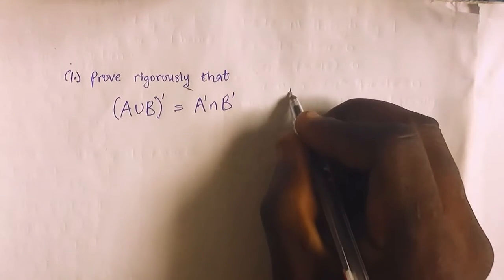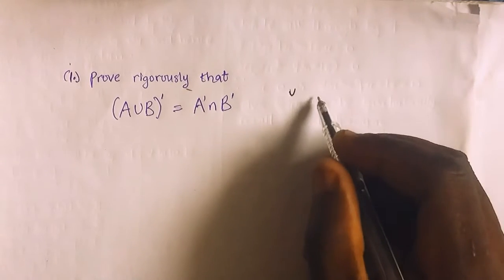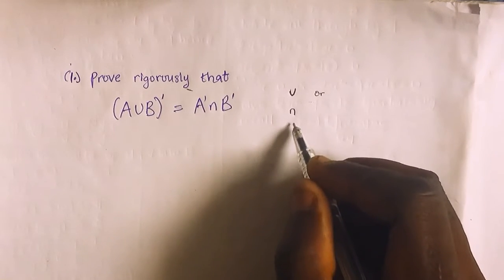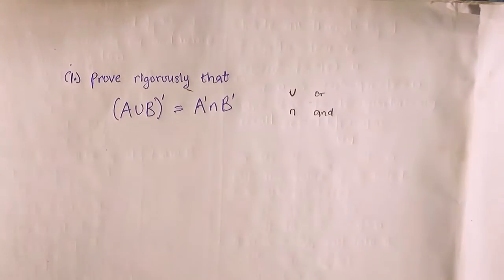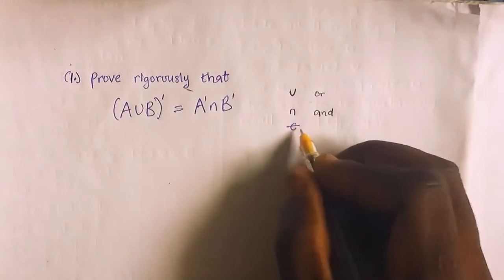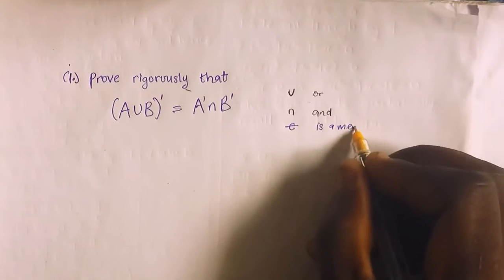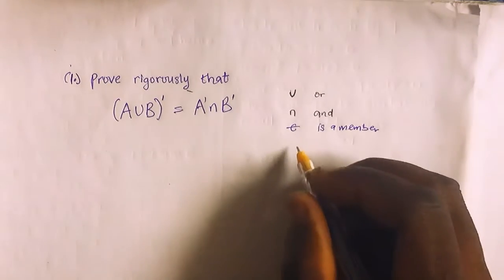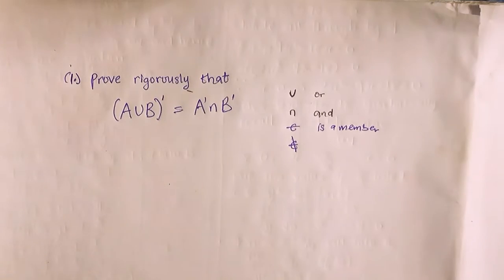If we have something like this — this is a union of two sets, also known as 'or'. If you have something like this — this is an intersection of two sets, also known as 'and'. And if you have something like this — this is also known as 'is a member of' or 'belongs to'. And if you have a negation of that symbol, that means 'is not a member'.